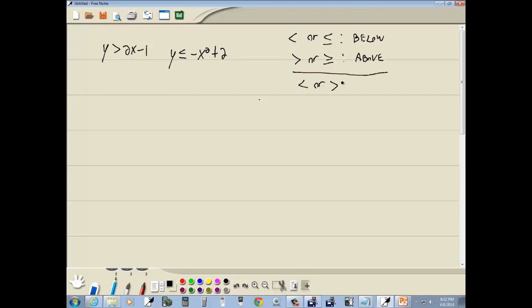If you have a less than or greater than versus a less than or equal to or greater than or equal to, less than or greater than is a dotted line. Less than or equal to or greater than or equal to is a solid line. These are based upon y being on the left side.